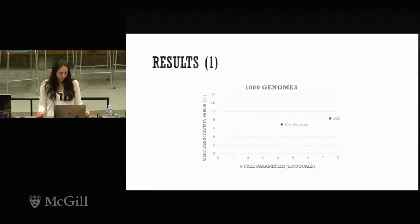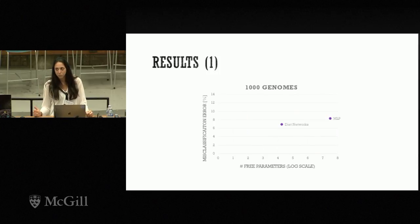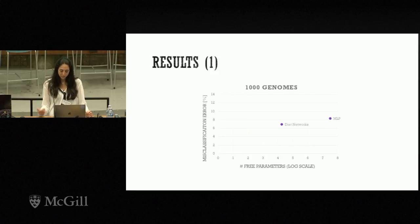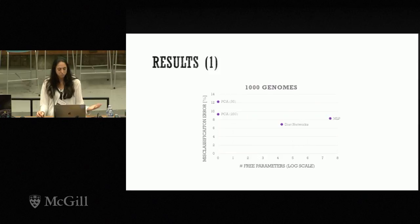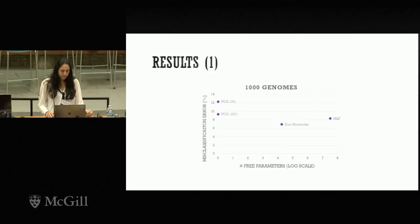In the results plot, the x-axis shows the number of free parameters on a log scale and the y-axis shows the misclassification error in percentage. The MLP is the predictor network without the auxiliary networks, while diet networks represent the full framework. As we significantly reduce the number of free parameters, results improve. We also compared to the traditional genomics approach of extracting features via PCA and learning a classifier on top — deep learning models outperform even the best PCA baseline.